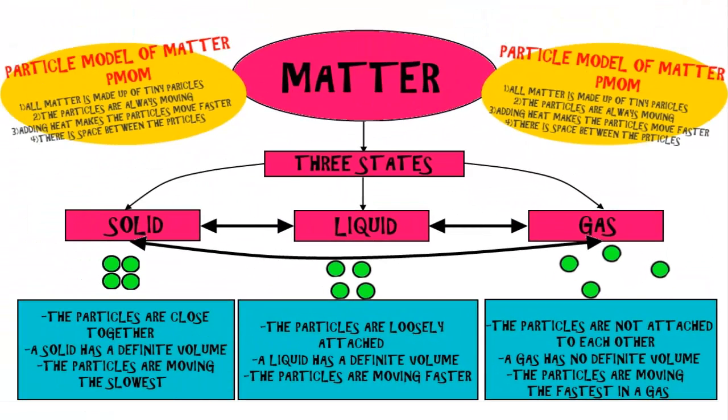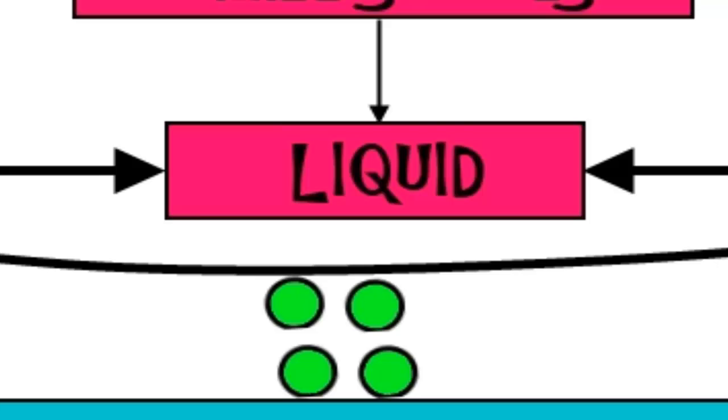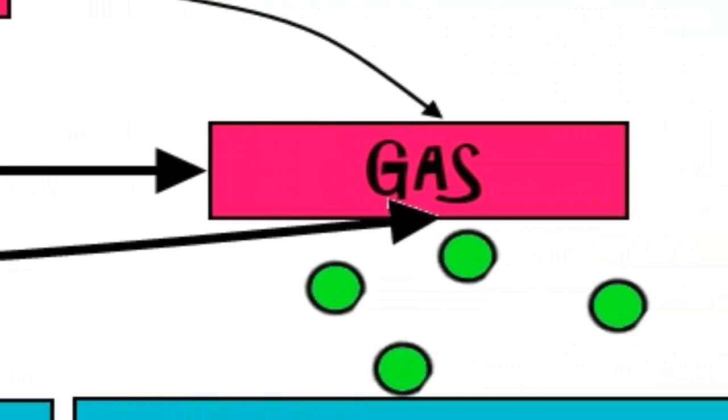Now you can change states of matter by adding or taking away energy. So let's use the example of water. When you add energy, you are adding heat to water, and it turns into a gas or water vapor.